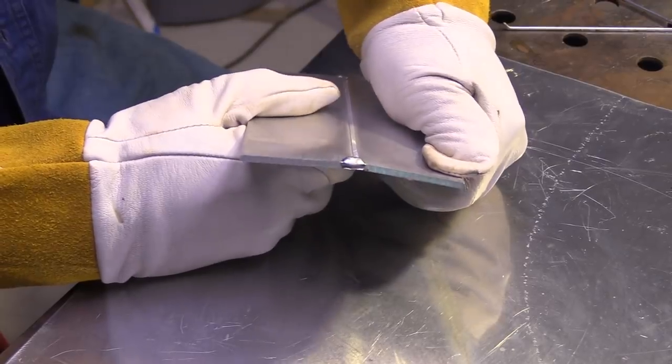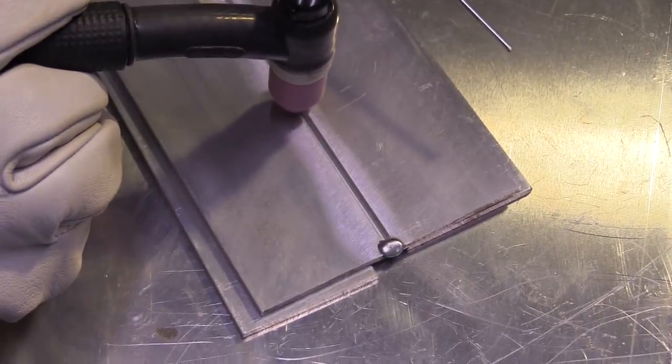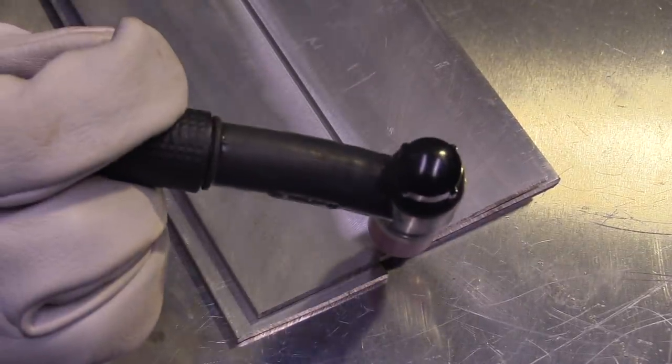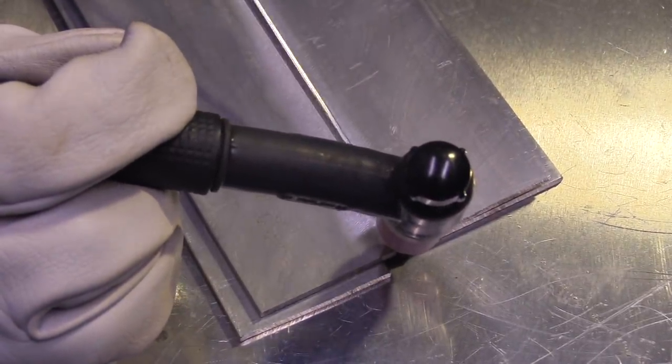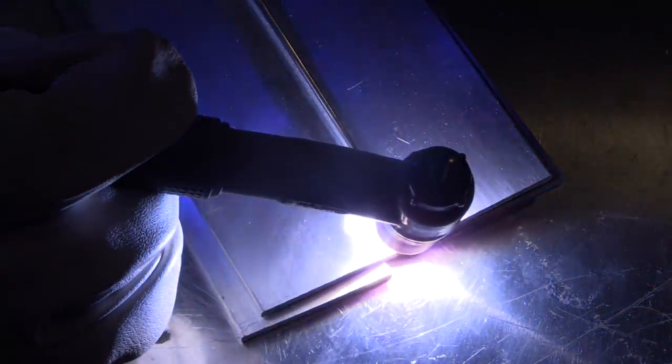So either you need to put it on some spacer plates or just give it like a two degree tweak here so that the penetration has somewhere to go. This is just a practice plate. Obviously you can't do that on live parts, but I'm just wanting to get it up off the table so that I don't smash that penetration dead against the table. You could do that with a backing bar or something.